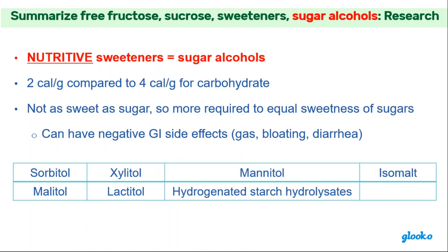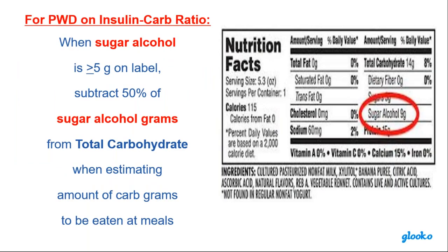Then there are the nutritive sweeteners — sugar alcohols. They only have 2 calories per gram compared to 4 calories per gram for all other carbohydrates. They're not as sweet so more has to be added, and they have negative GI side effects: gas, bloating, and diarrhea. For patients on insulin with insulin-carb ratios: when the sugar alcohol on a label is 5 or more grams, subtract 50% of that sugar alcohol from the total carbohydrate when estimating the carb grams for those on insulin-carb ratios — same as with dietary fiber.